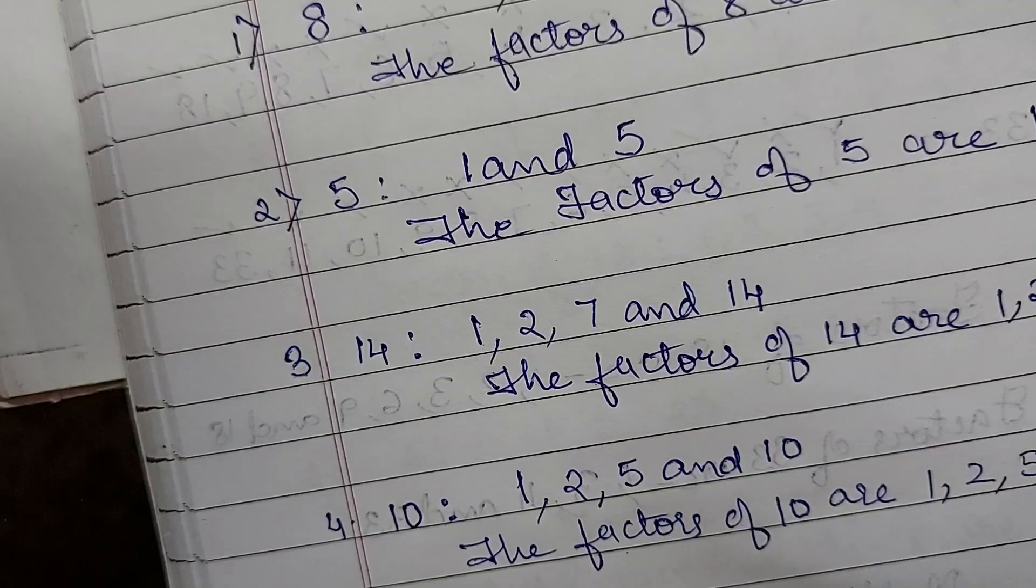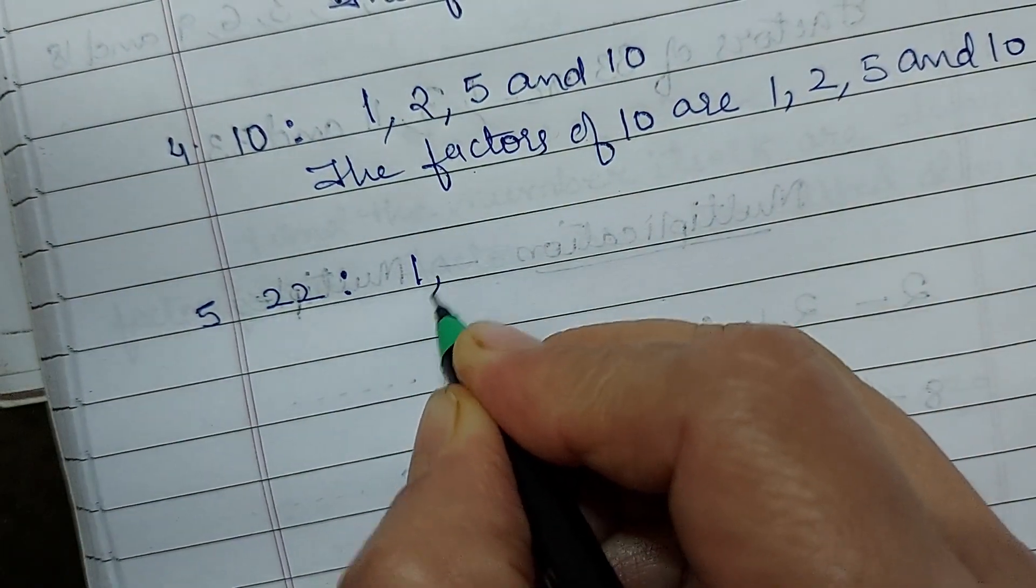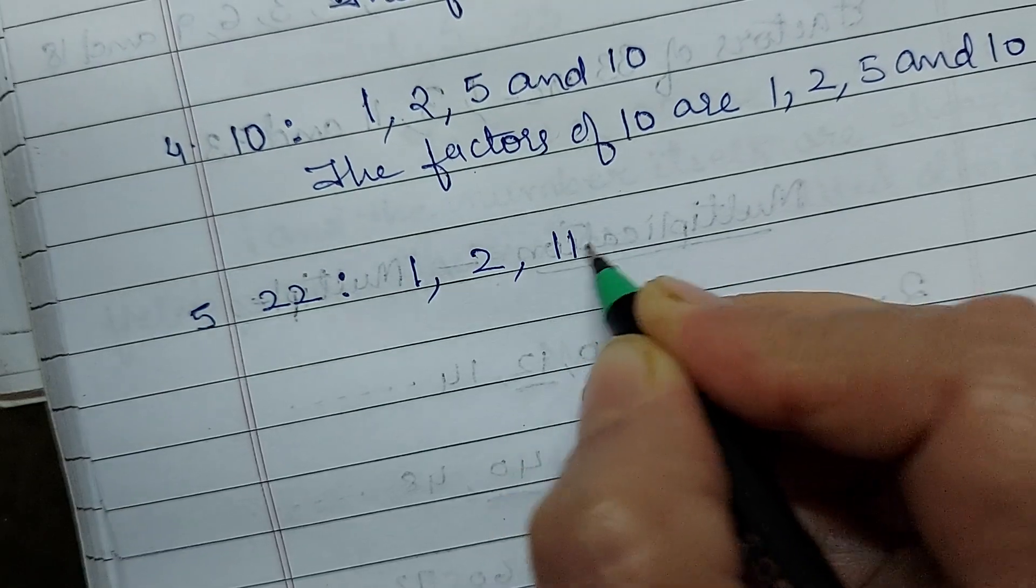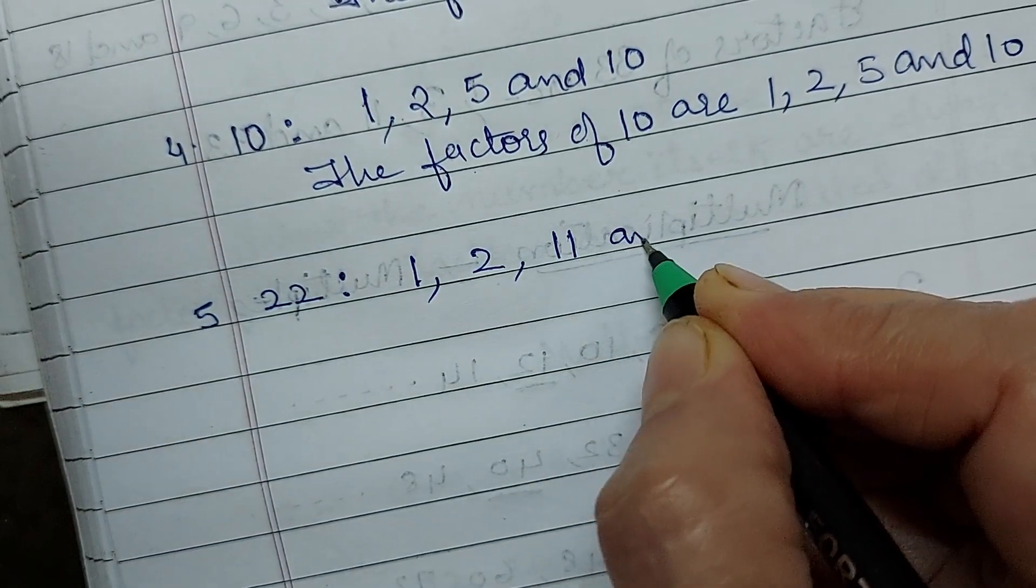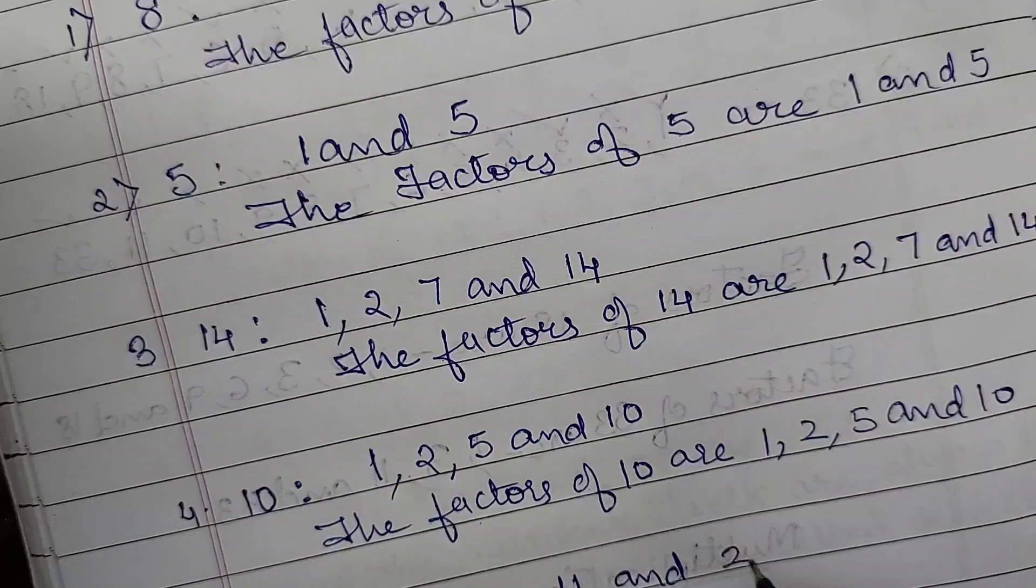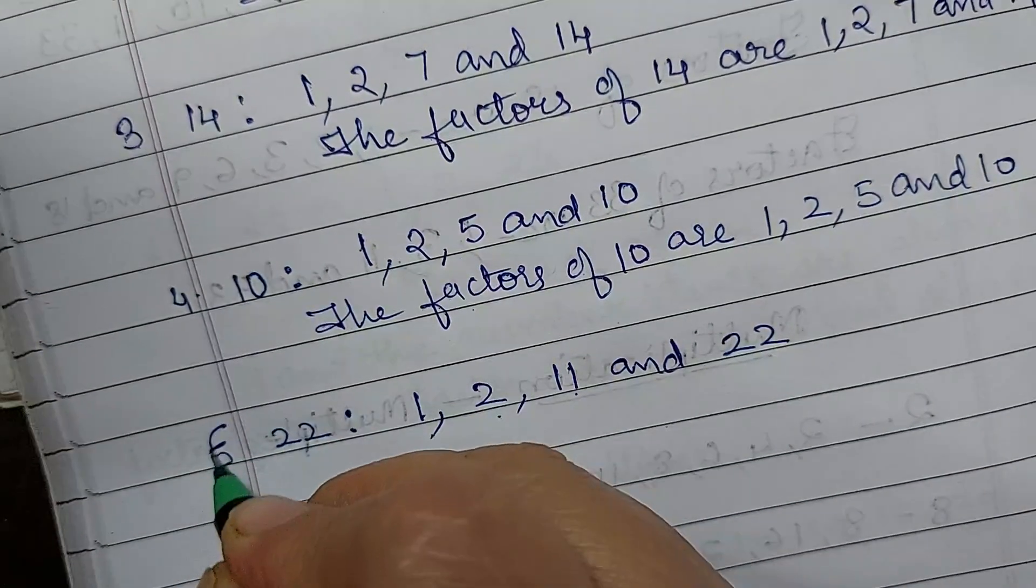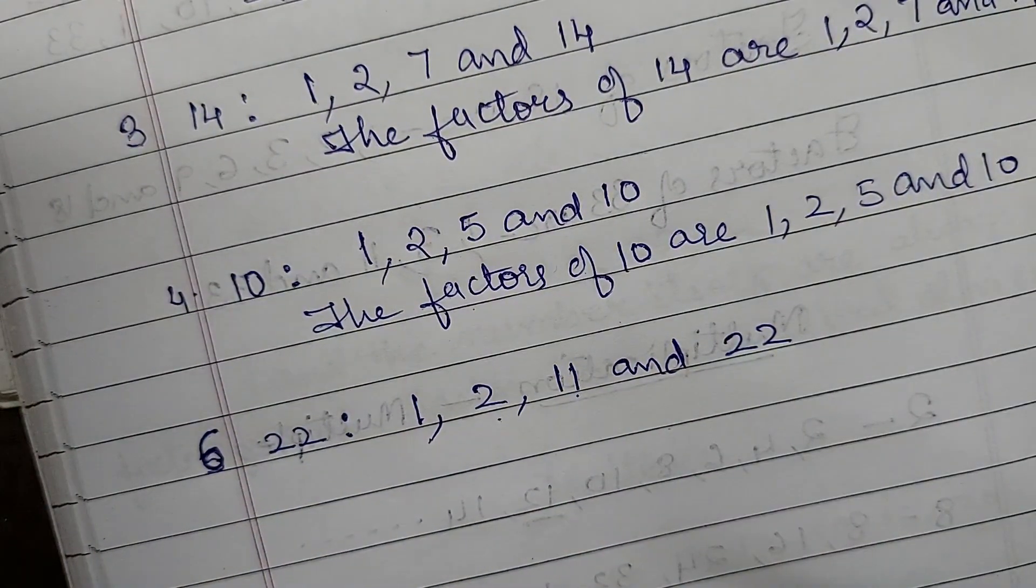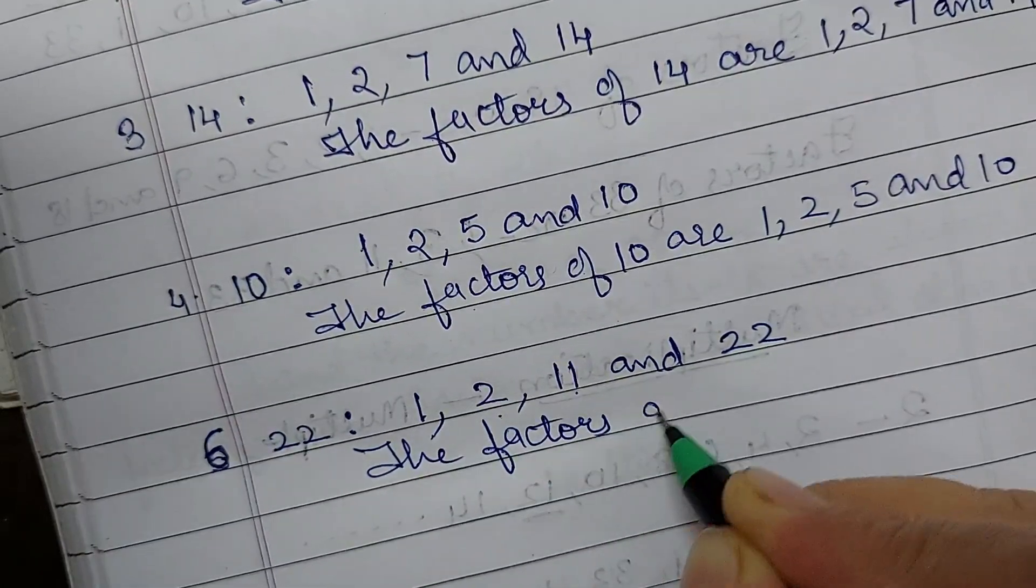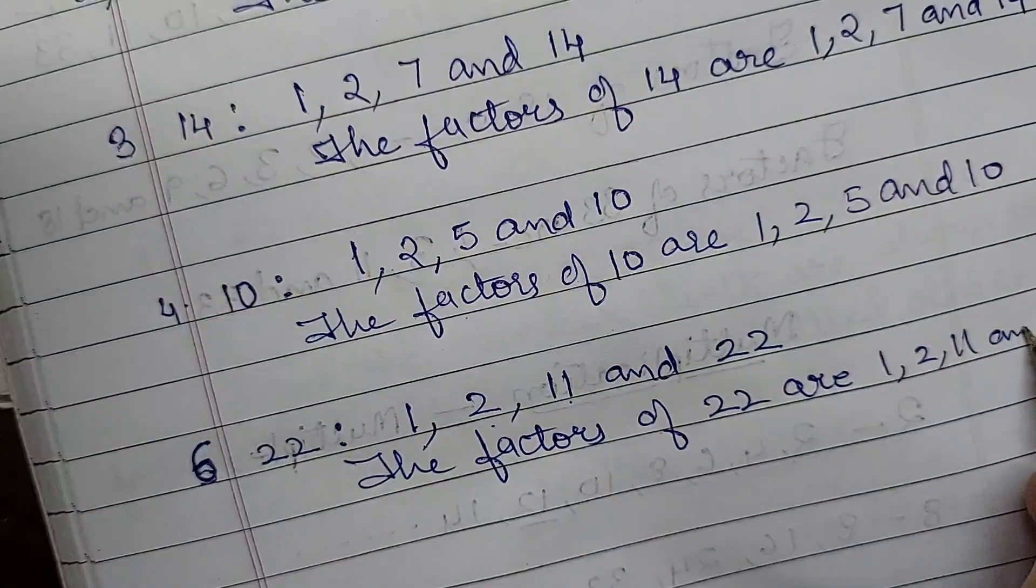Okay. Fifth number is 22. So it will come in the table of 1. Then it is 2. 2 elevens are. Then 11 twos are. And 22. And I skipped out one sum. That is 7. 11 and 22. 1, 2, 11 and 22. This is sum number 6. Okay. So we will write the factors. The factors of 22 are 1, 2, 11 and 22.